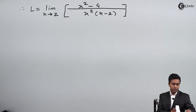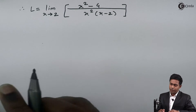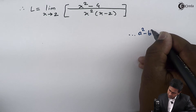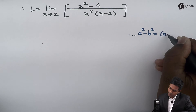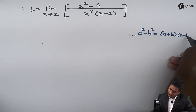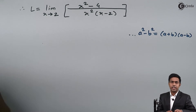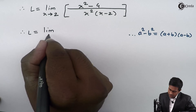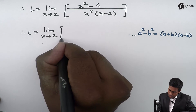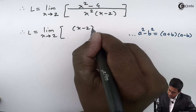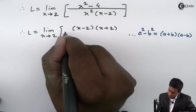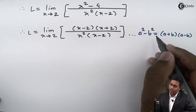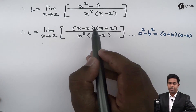We can now apply the difference of squares formula: a squared minus b squared equals (a plus b) times (a minus b). Using this formula, x squared minus 4 becomes (x minus 2) times (x plus 2). So L equals limit x tends to 2 of (x minus 2)(x plus 2) upon x squared times (x minus 2).